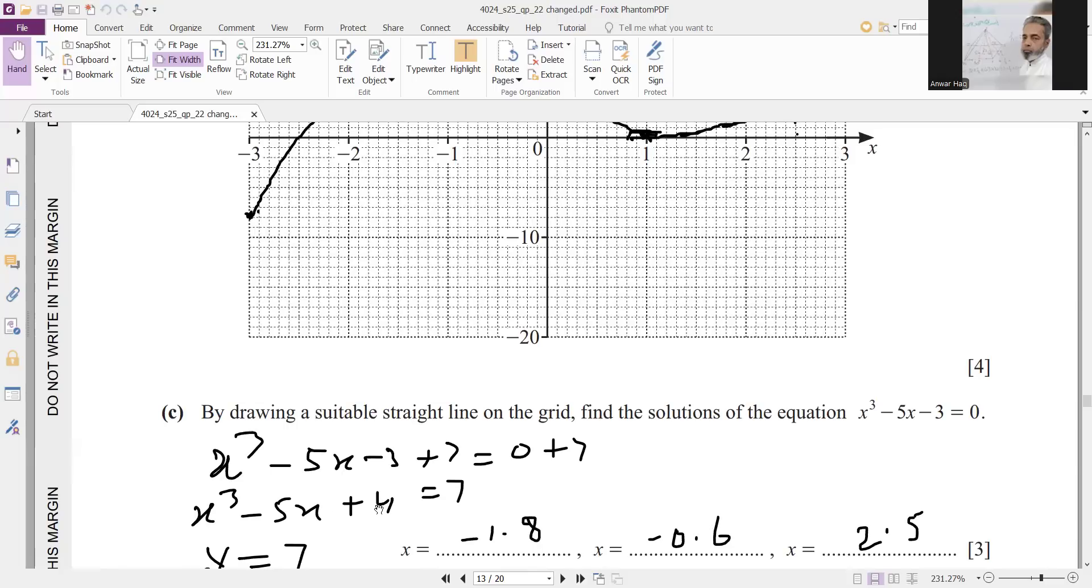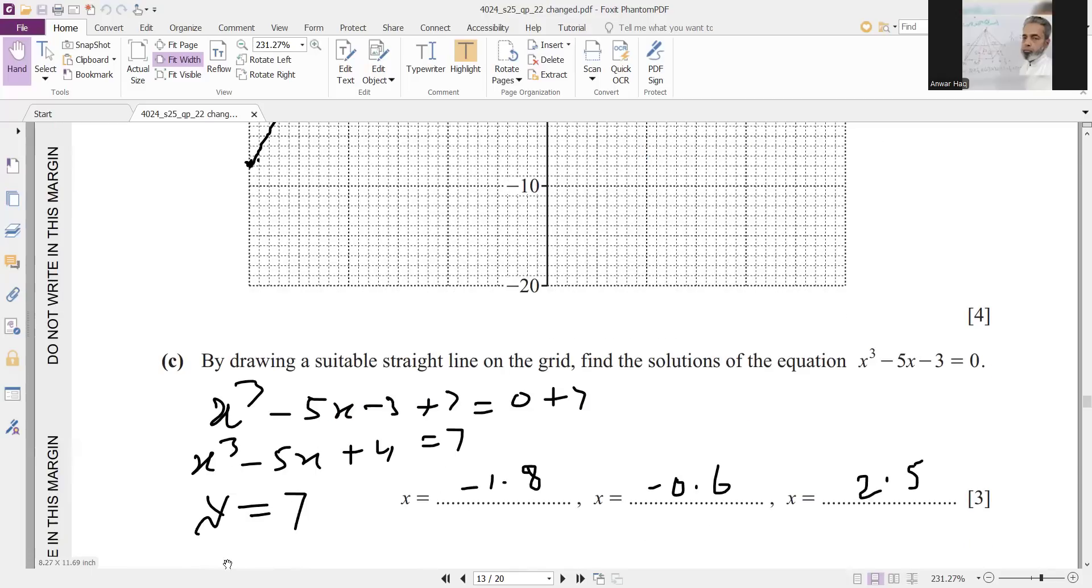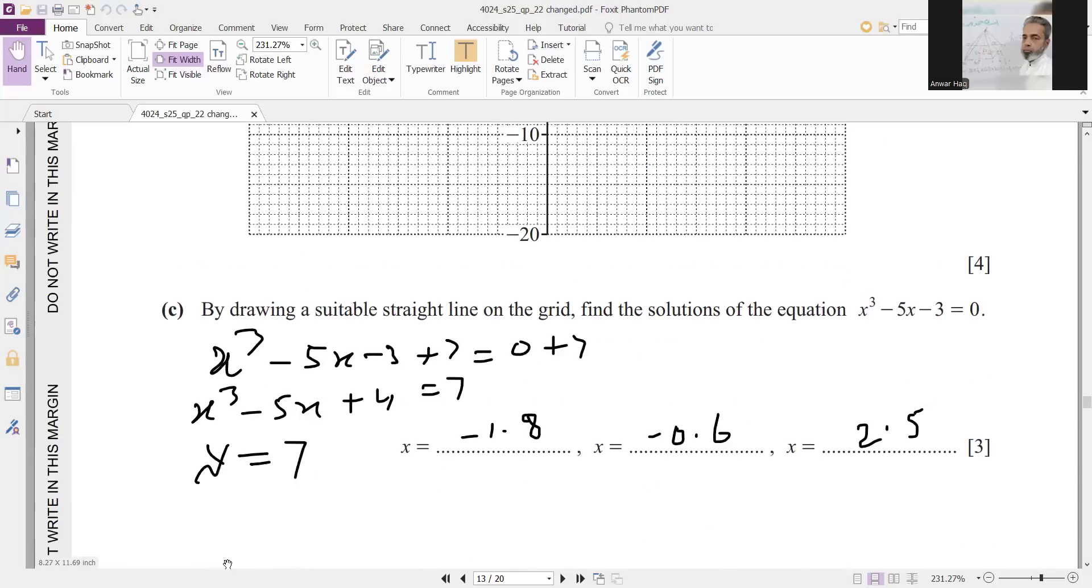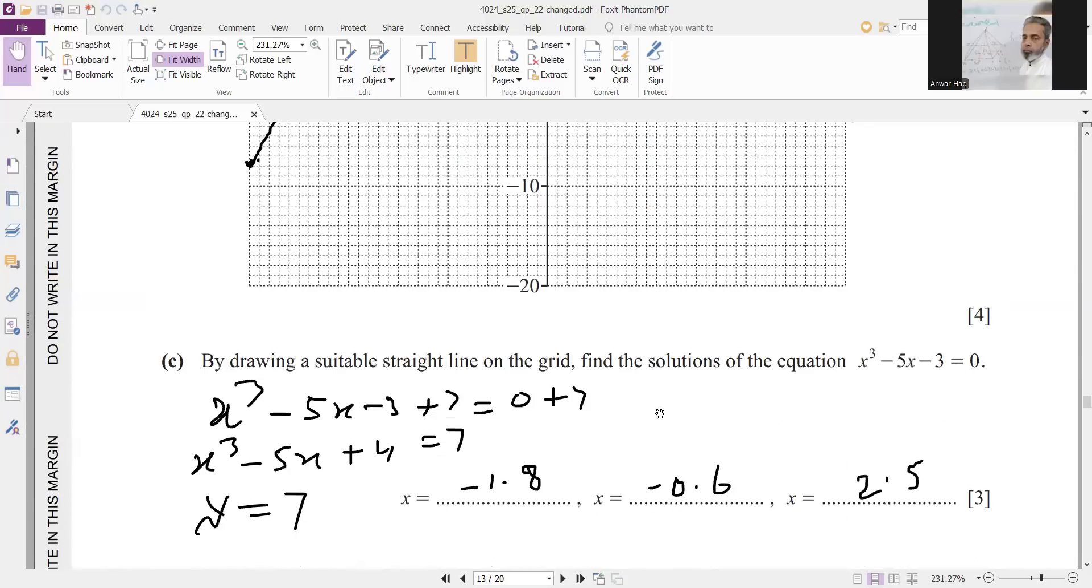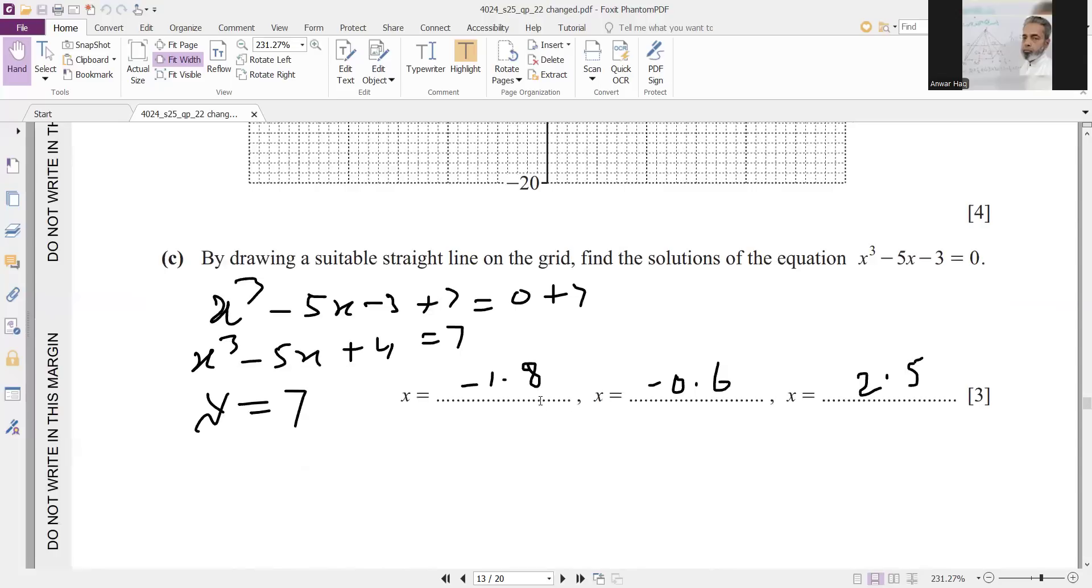And this is your general equation which is equal to y. Then y equals 7. Plot this line on the graph y equals 7. This is y equals 7 line. And this line cuts your curve at three places. So these are the three answers from the curve: one is 2.5, and there is minus 2.6, and other is minus 1.8.